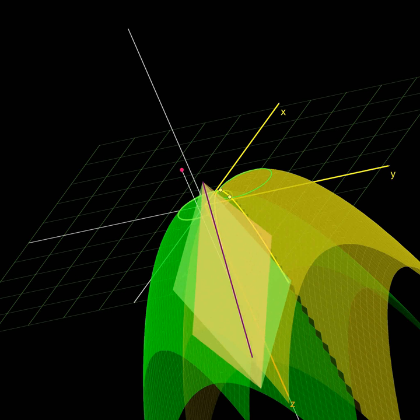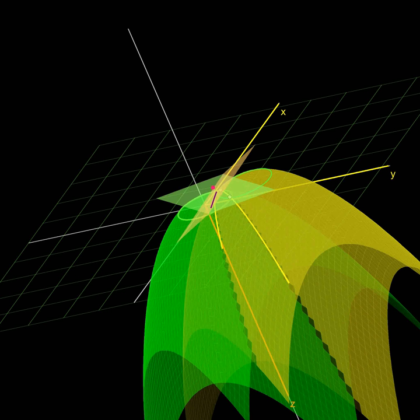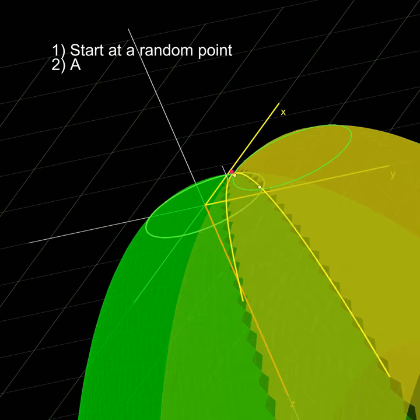As we iterate, we see that this point gets closer and closer to one of the solutions of the paraboloid. In other words, solving this linear system again and again helps us solve the original system. So that's the Newton-Raphson method.